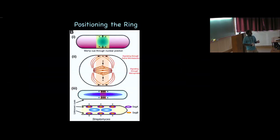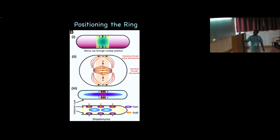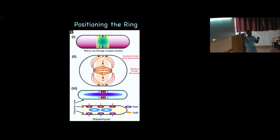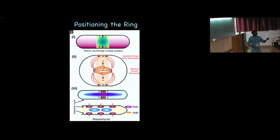How does the division machinery get to the site of division? One way is to know where the middle is — somebody tells you this is the middle and you go there. This is what happens in fission yeast S. pombe: the nucleus itself provides a cue to indicate the middle. Microtubules emanating from the nucleus hit the cell poles, and through dynamic instability — polymerizing and depolymerizing — the pushing forces center the nucleus. Once the nucleus is in the center, at a particular cell cycle stage a cue comes out of the nucleus and localizes immediately over it, forming the nucleation center for the actomyosin ring. This is a positive cue.